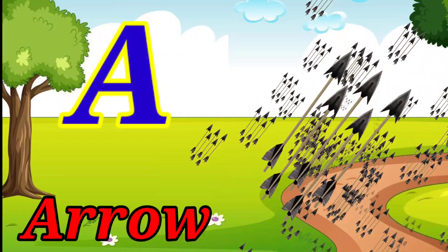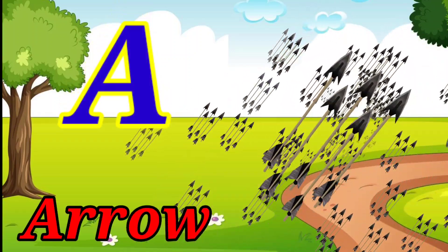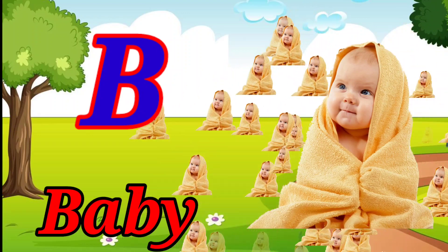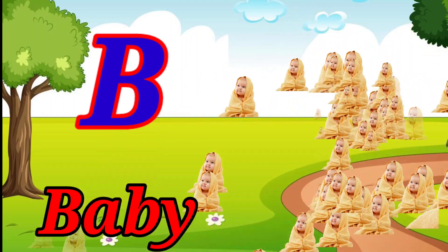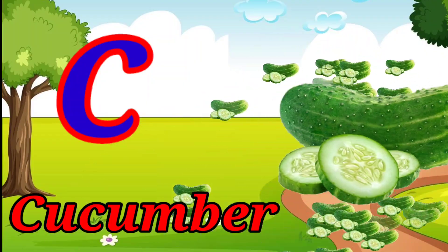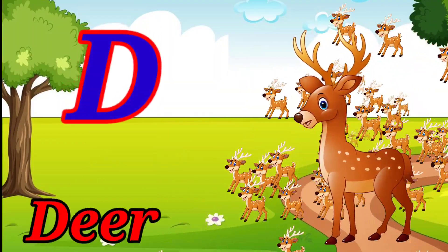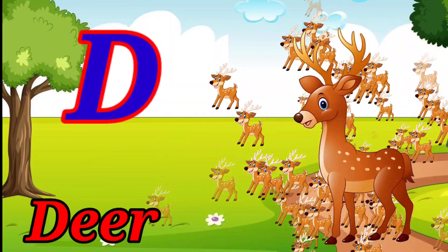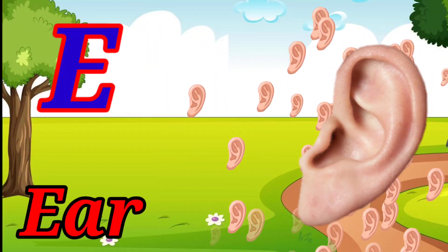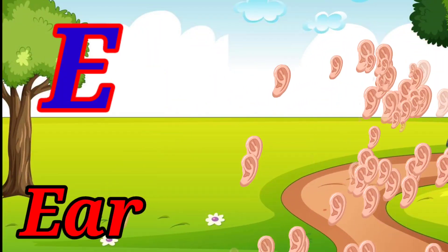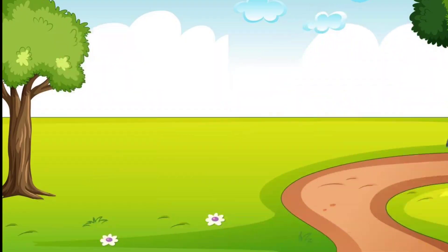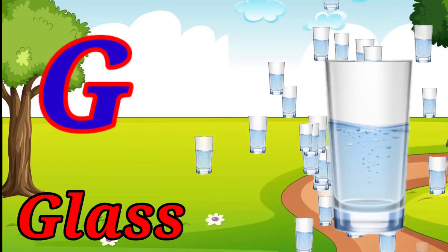A for arrow, B for baby, C for cucumber, D for deer, E for ear, F for fox, G for glass.